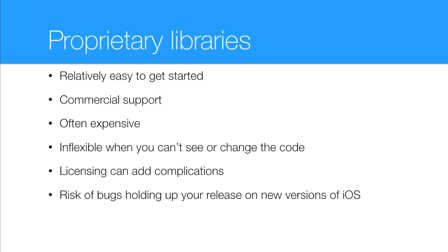Also, if your customers ask for a specific feature and your libraries don't permit it and the vendor isn't interested in adding it, you're stuck between a rock and a hard place. Being able to have access to the source code and modify it is really useful to us. Also, the way some libraries enforce their licensing can be a challenge — for example, including bundle identifiers baked into the static library can mean that if, for some deployment reason, you want to use a different bundle ID, suddenly that library doesn't work anymore.